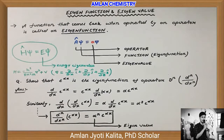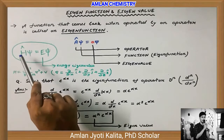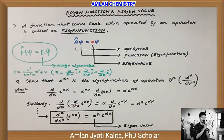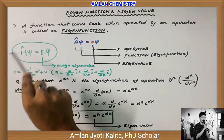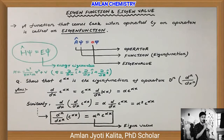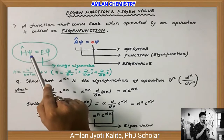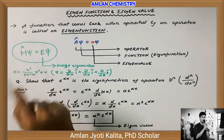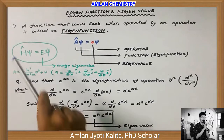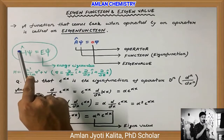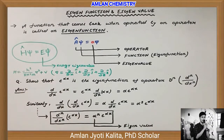Quantum mechanics mein sabse zyada jo equation use hoti hai woh hai Schrödinger equation. Yeh simplified Schrödinger equation ka representation hai: H-cap Ψ = EΨ. Yahan Ψ ek wave function hai, electronic wave function, jo ki electron ke properties apne andar chupaaye hue hai. Yeh H-cap jo hai, yeh ek operator hai — just like differentiation or integration ek operator hota hai.